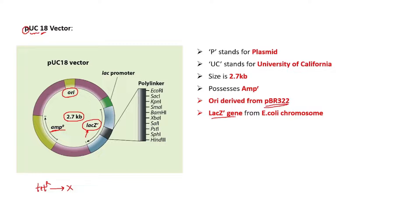Scientists excised the lacZ gene from the E. coli chromosome and inserted it into the PUC18 vector. Two things to remember: first, the origin of replication of PUC18 is derived from the artificially made vector PBR322; second, the lacZ gene present uniquely in PUC18 is derived from the E. coli chromosome.